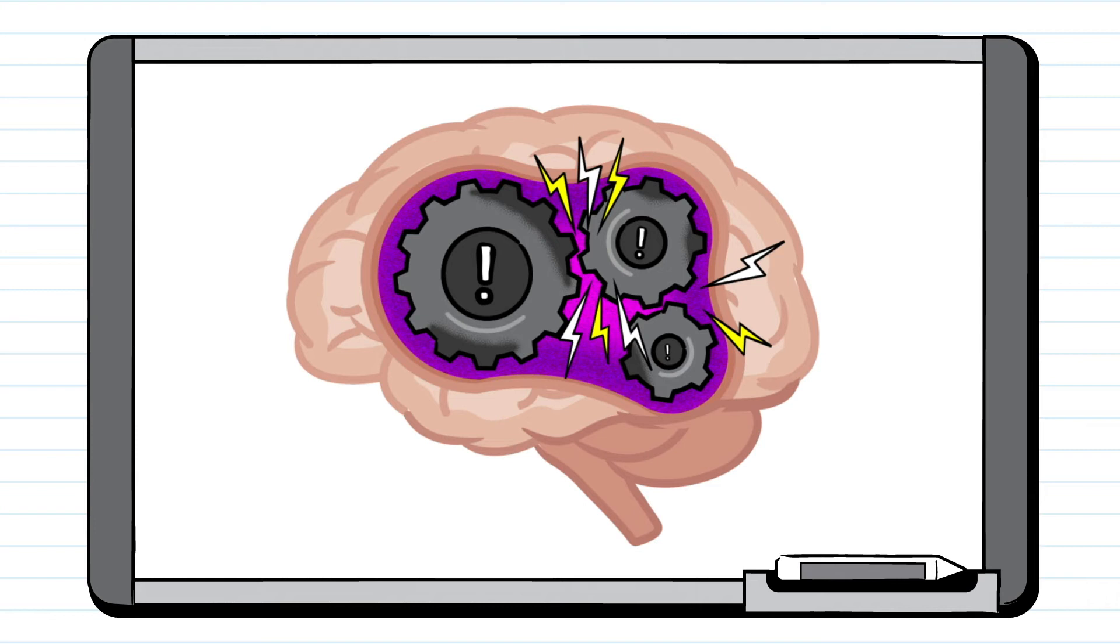An animated woman stands at a whiteboard in front of a classroom of students. An illustration of a brain appears on the board. The brain is composed of three interlocking gears. Four arrows point to the brain as it begins to flash red.